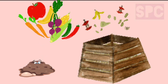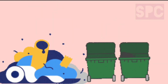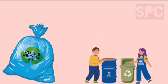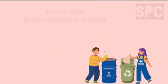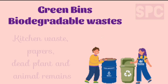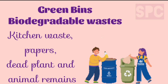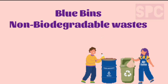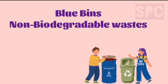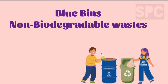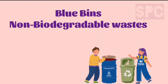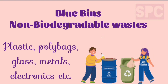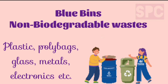In rural areas, waste is mostly converted into manure which is used in the fields for healthy growth of crops. There should be a proper provision for the disposal of waste. Waste produced in urban areas should be disposed properly and thrown in covered dustbins. Waste should be segregated before disposal. Green bins are used for biodegradable waste like kitchen waste, papers, dead plant and animal remains, which easily mix with the soil. Blue bins are used for non-biodegradable waste which does not mix in the soil.